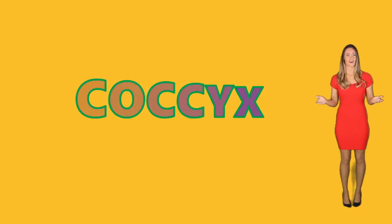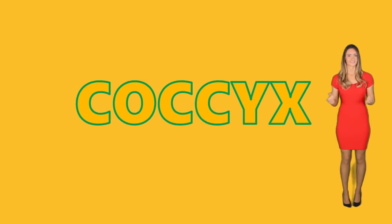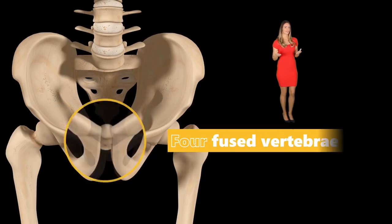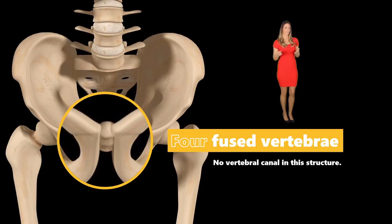The coccyx is a small bone found below the sacrum. Just as there are no vertebral arches in the coccyx, there is also no vertebral canal in this structure.